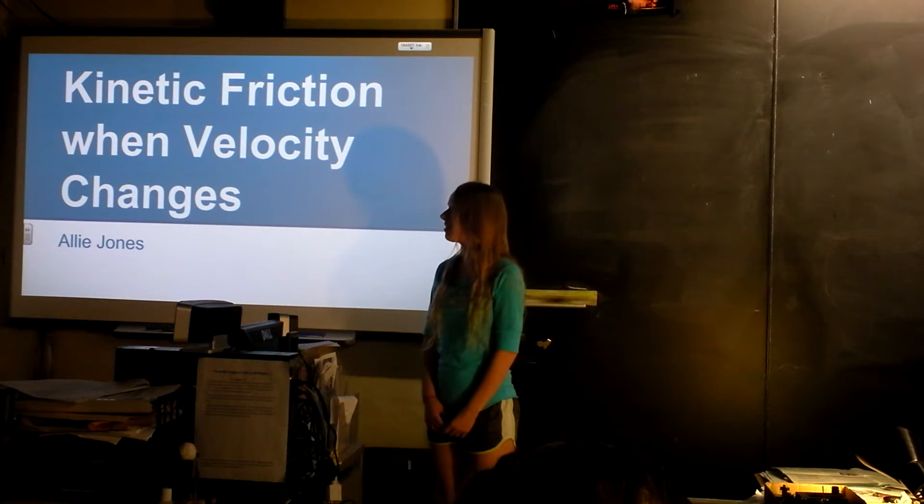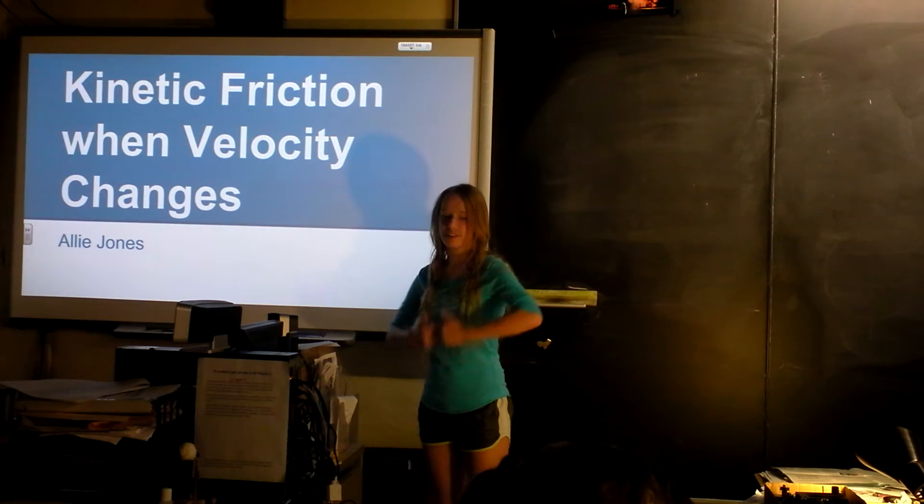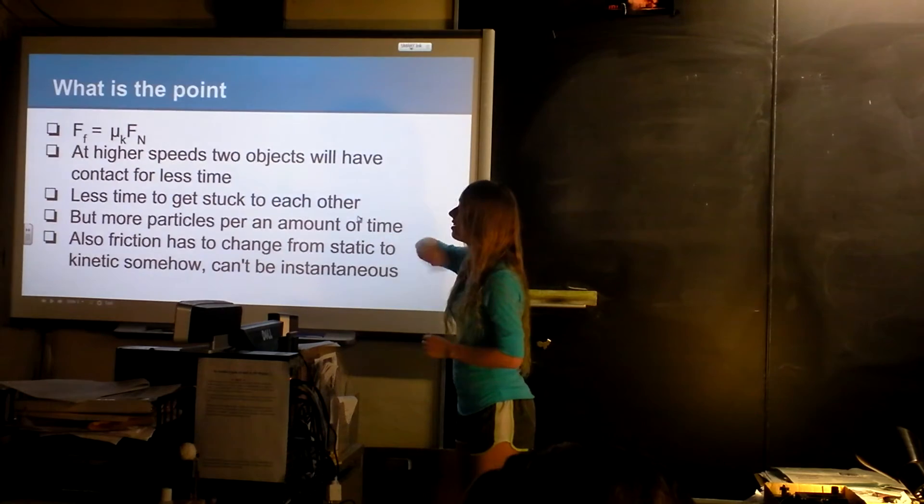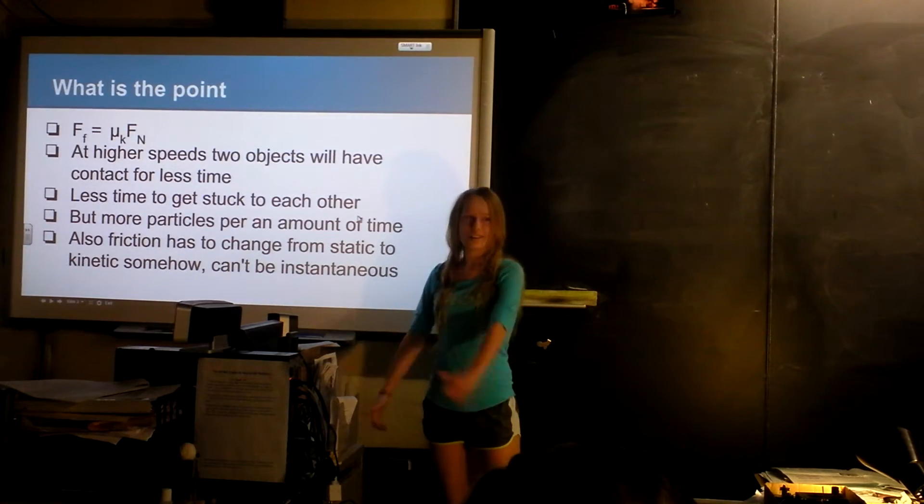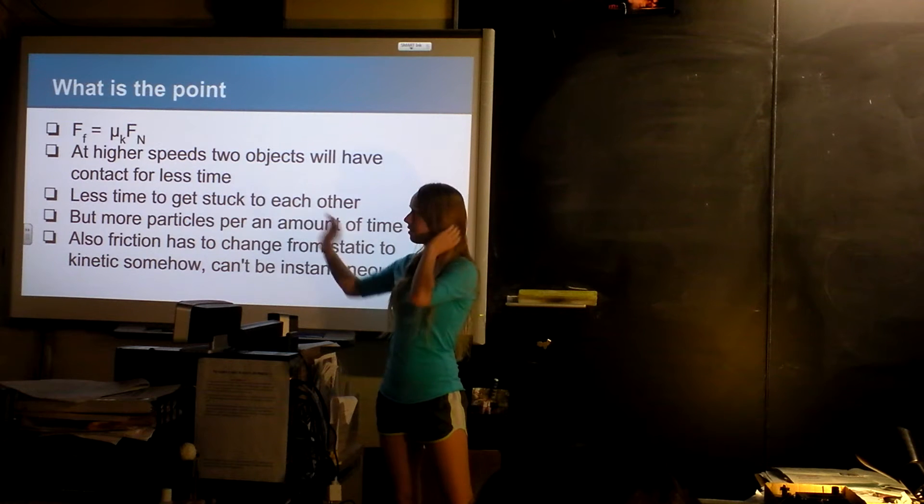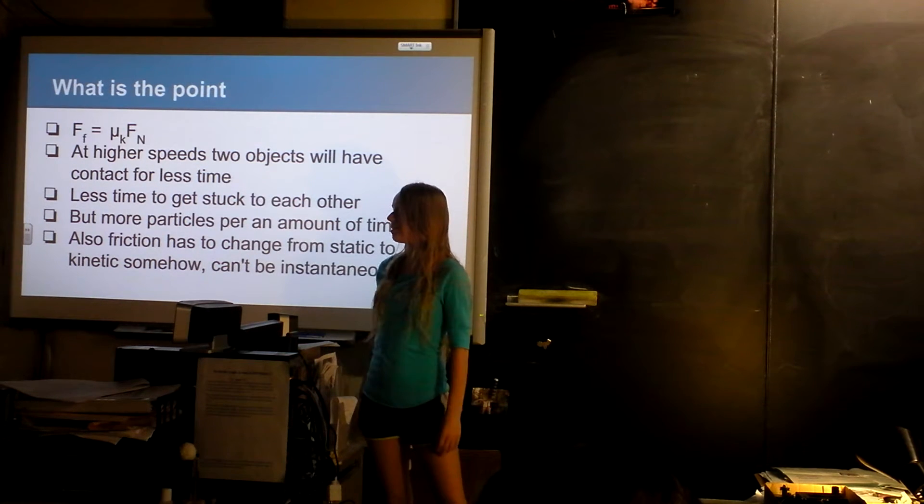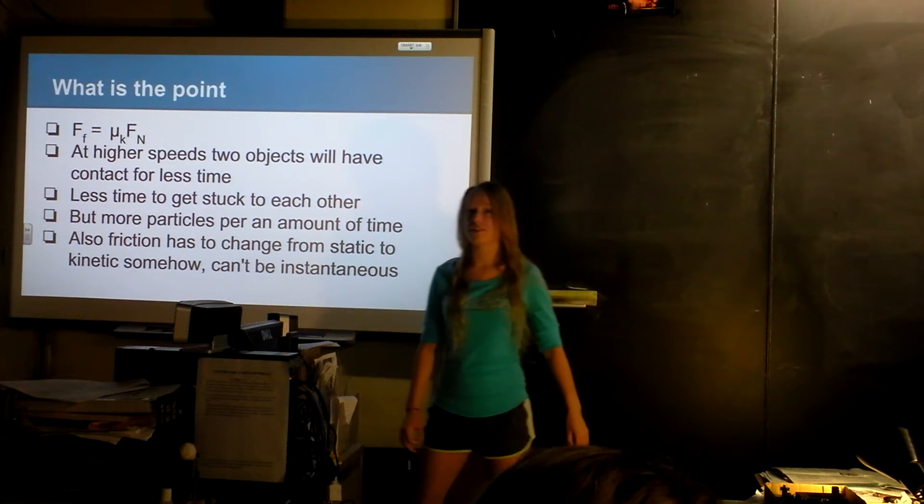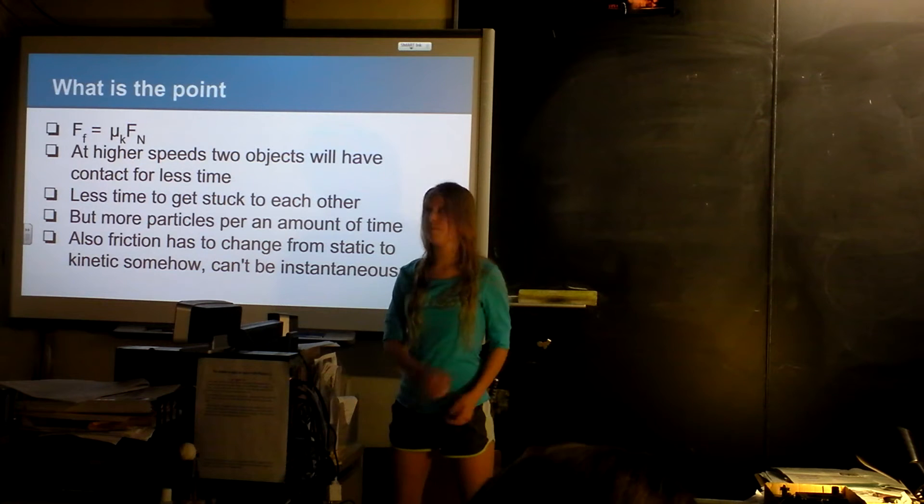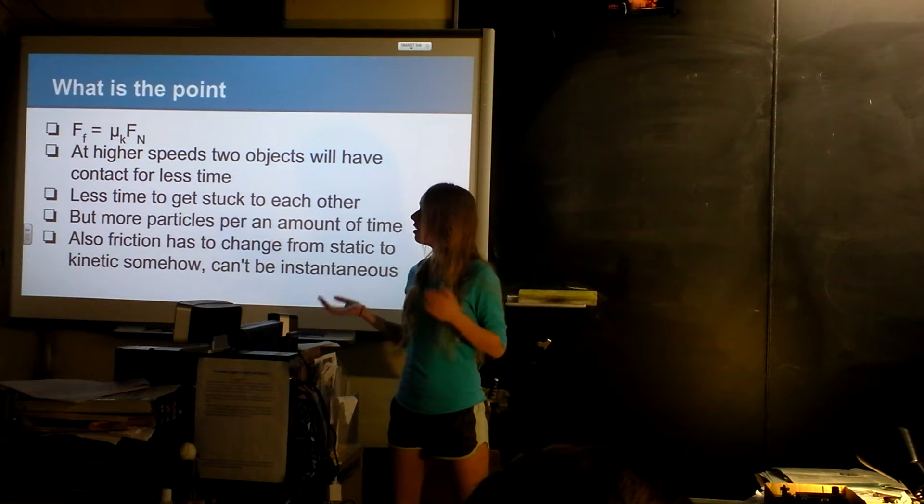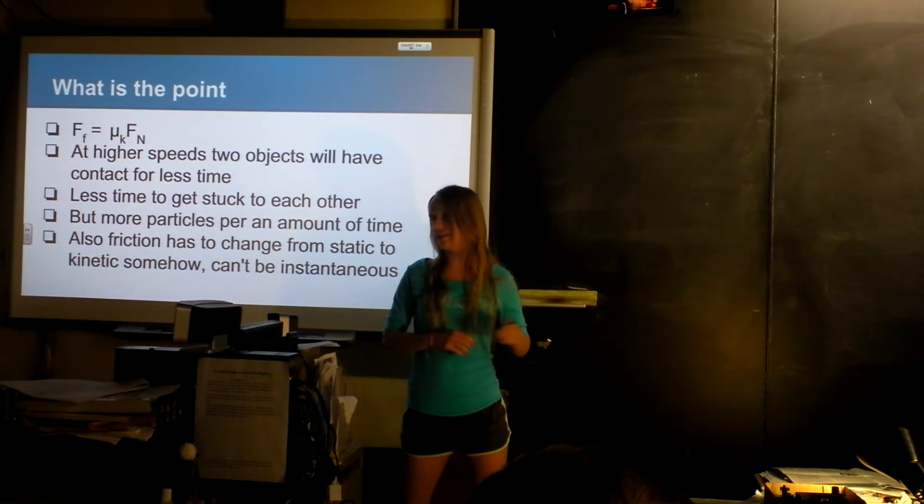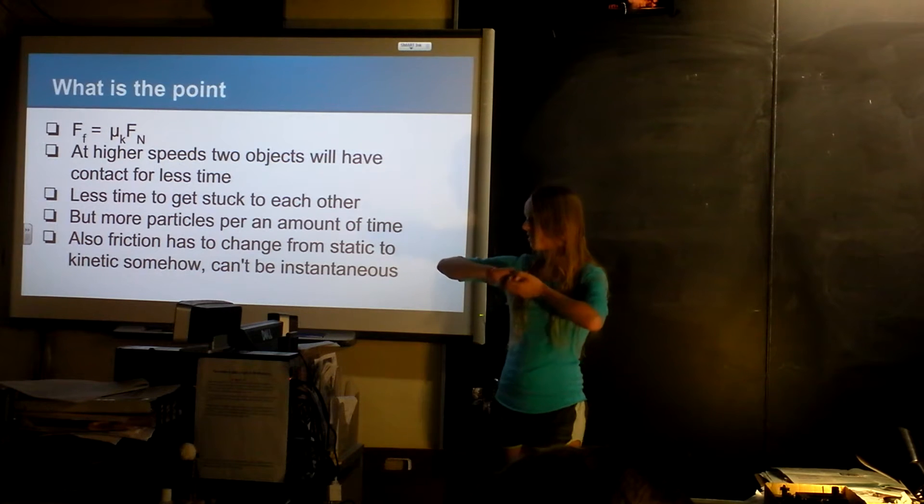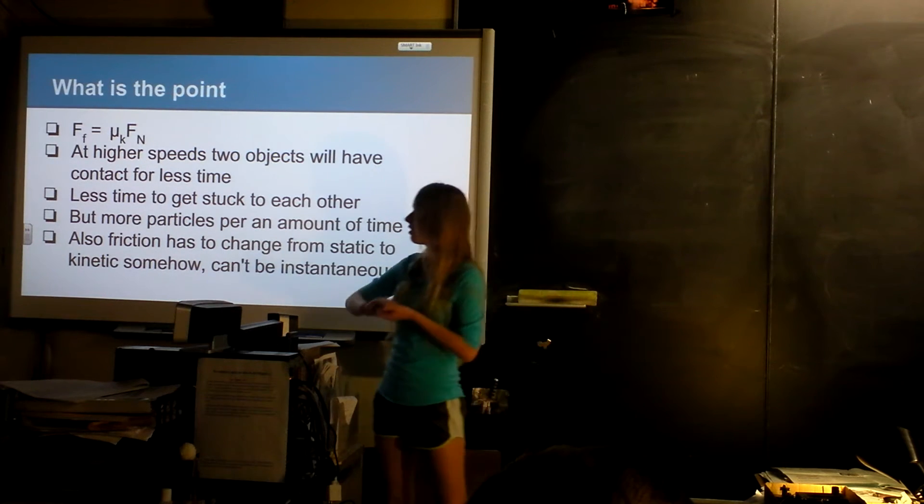I did my lab on kinetic friction as a function of velocity. The kinetic friction equation is supposed to be mu_k times F_n. But I thought that if you were pulling something across a table at higher speeds, the particles on one object would be touching other particles for less time so they wouldn't have as much time to get stuck on each other.